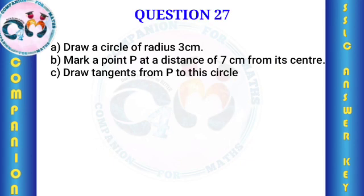Draw a circle of radius 3 centimeters. Mark a point P at a distance of 7 centimeters from the center. Draw tangents from P to this circle. The radius is 3 centimeters and the distance OP is 7 centimeters.